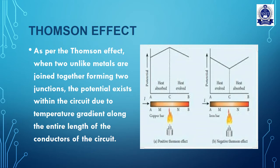The Thomson effect states that when two unlike metals are joined together forming two junctions, a potential exists within the circuit due to a temperature gradient along the entire length of the conductor. So the potential exists due to the temperature gradient along the total length of the circuit.